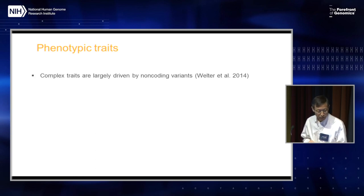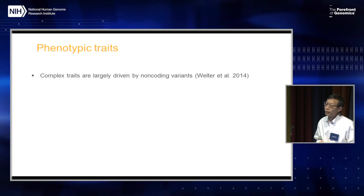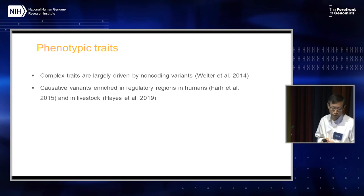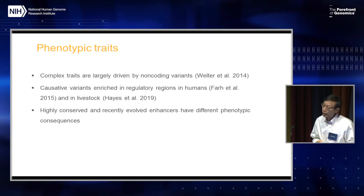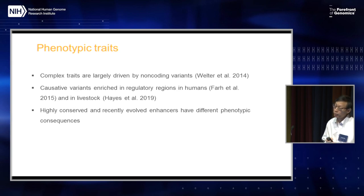Because all of those complex traits are very important, we know that the contribution is not just from coding genes. Actually, the majority of these contributions come from non-coding variants. There are many GWAS studies in the biomedical field that demonstrate that non-coding variants are very, very important for the contribution of phenotypic variation in complex traits, including disease. Studies in both human and livestock have indicated that those causal variants are enriched in regulatory regions. We know that even highly conserved regulatory elements such as enhancers, which have recently evolved, do have different phenotypic consequences. That's why it's important to do comparative epigenomics — to learn which regulatory elements are more highly conserved or recently evolved.